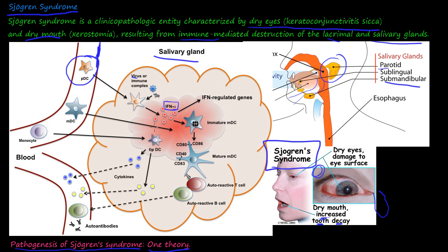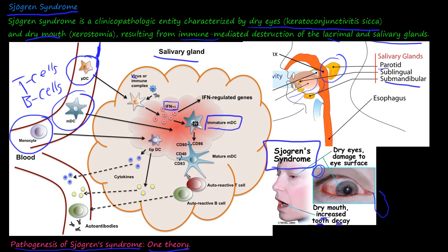Once the PDC is in the gland, it secretes IFN-alpha. Further inflammation causes a myeloid dendritic cell (MDC), along with monocytes, T cells, and B cells, to enter the area. The IFN-alpha leads to maturation of this autoantigen-presenting MDC, which then gobbles up antigens from the salivary gland and presents them to autoreactive T cells and B cells.